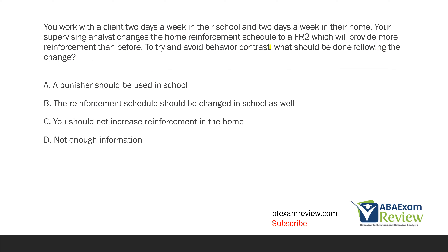You work with a client two days a week in their school and two days a week in their home. Your supervising analyst changes the home reinforcement schedule to an FR2, which will provide more reinforcement than before. To try and avoid behavior contrast, what should be done following the change? Behavior contrast says when a behavior is increased or decreased in one environment due to a change in schedule, if the schedule doesn't change in a different environment, the behavior is going to move in the opposite direction. You're in the school and in the home with the client, and your analyst changes the reinforcement schedule to an FR2 in home. If that schedule is effective in home and we don't change it in school, what's likely to happen?